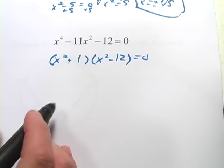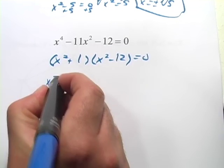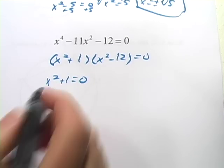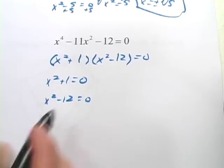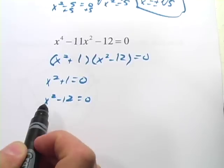Now we've got our two factors that we can set equal to 0, so x squared plus 1 equals 0, and x squared minus 12 equals 0. And our x squared plus 1 equals 0 is going to be a little bit different this time.